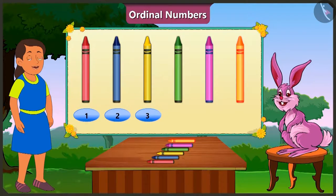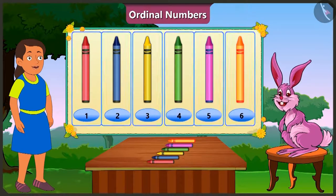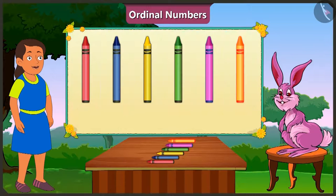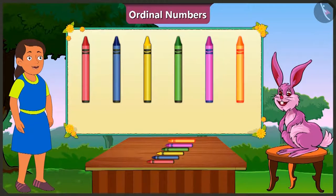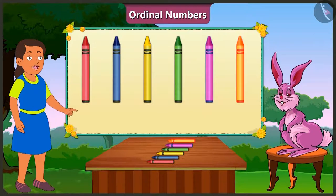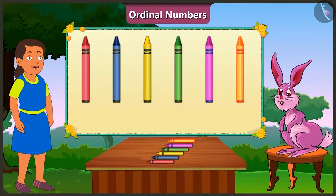Look Bubbly, there are a total of 6 crayons here. When we need to know the position of something, we don't have to count them all. I did not understand, Bunny. Okay, let me explain.